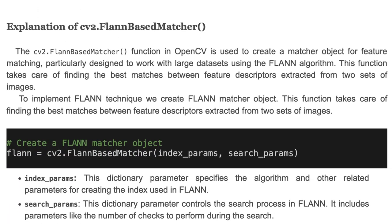OpenCV provides the FLANN-based matcher function, used to create a matcher object for feature matching. It is particularly designed to work with large datasets using the FLANN algorithms. This function takes care of finding the best matches between feature descriptors extracted from two sets of images. To implement the FLANN technique, we create a FLANN matcher object. Here is how to create a FLANN matcher object.